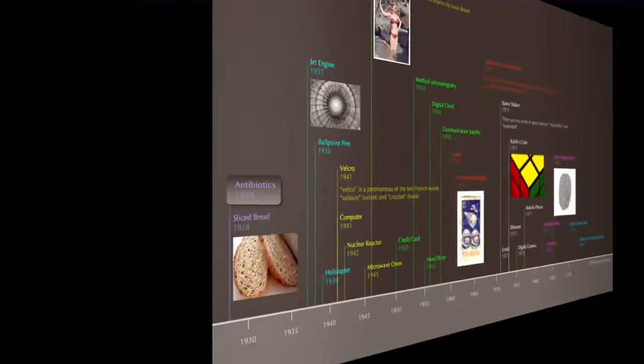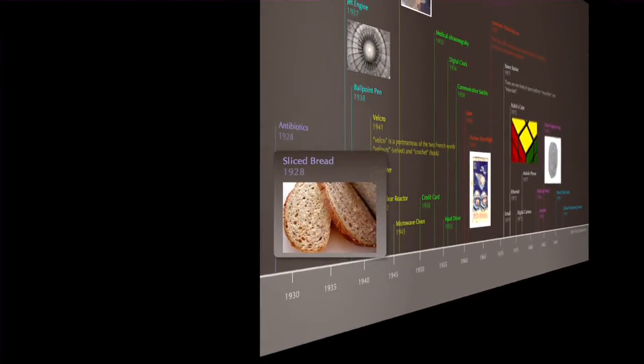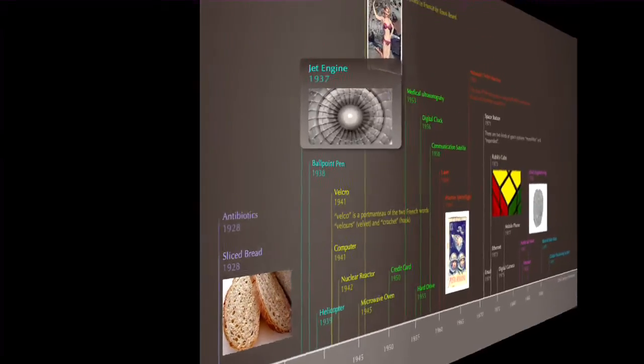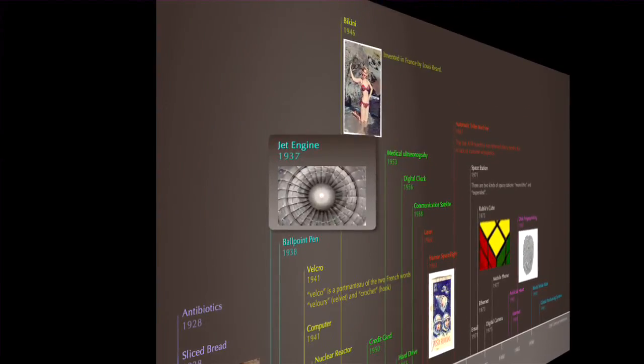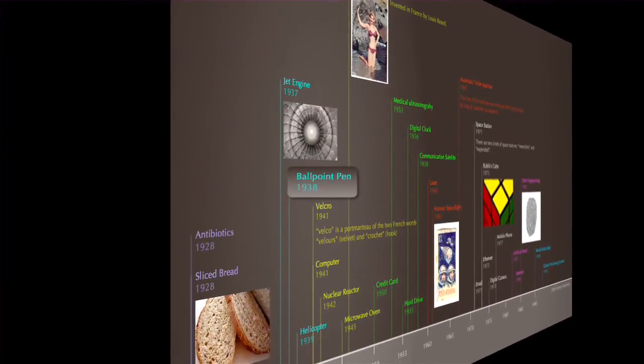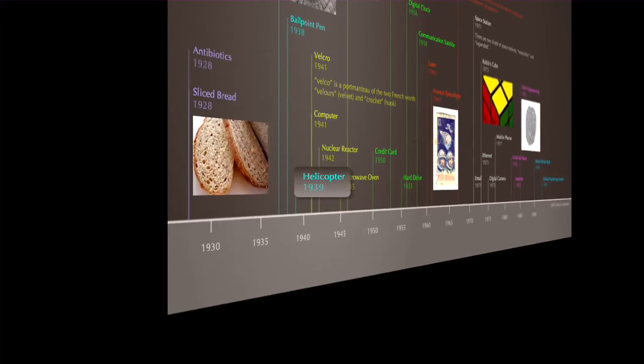Now this is a list that I found on Wikipedia that shows the greatest inventions in the 20th century since sliced bread. With the timeline you get a sense of the story and you can begin to draw connections and comparisons between the different events.